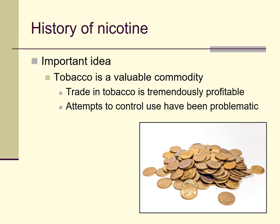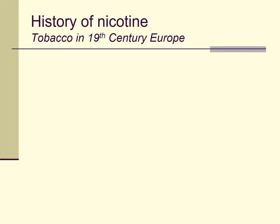The important ideas here are that tobacco has a long history — true of really many drugs we'll discuss in this class. Tobacco was and is a valuable commodity; if you can control the trade in tobacco you can make an enormous amount of money. However, attempts to control that trade that are too tight — to the point of prohibition or steep taxation — have been problematic in all sorts of different ways throughout history. Controlling drug supplies can make you a lot of money, but it can also be problematic and difficult to do.